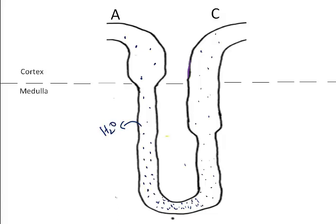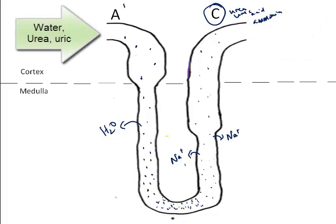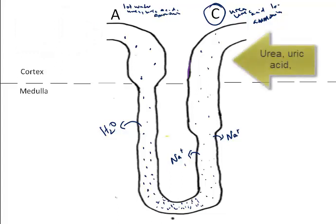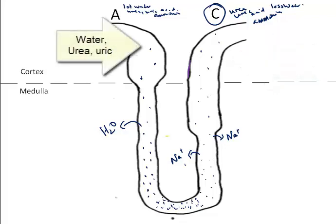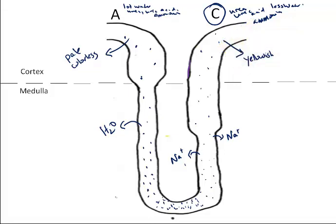And what we're concentrating is the nitrogenous waste because sodium is also being removed. So that what we have at C is a concentration of urea, uric acid, and ammonia. What we had going in had a lot of water, urea, uric acid, ammonia. Here we have far less water. So if you were to actually take a look at the color of the solution here, you would notice that it was very pale, maybe colorless. If you looked at the solution here, it would look yellowish, very yellow if you're very dehydrated. And that yellow tinge comes from the concentration of those nitrogenous wastes.